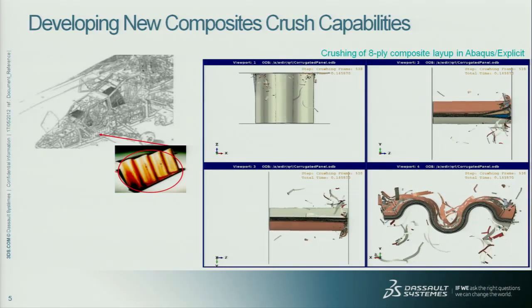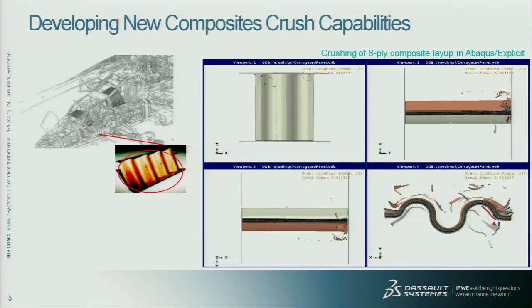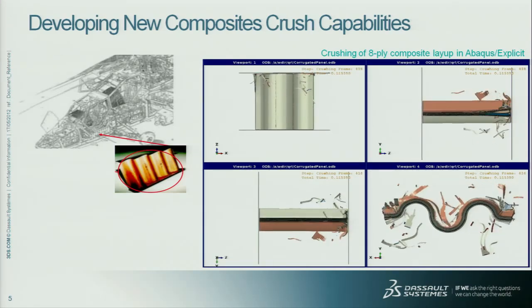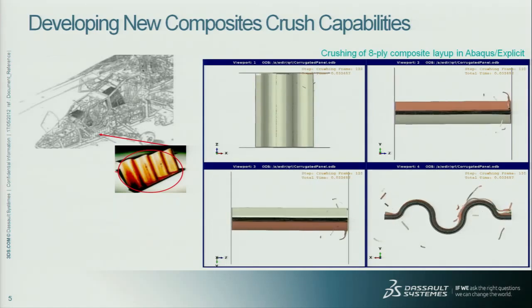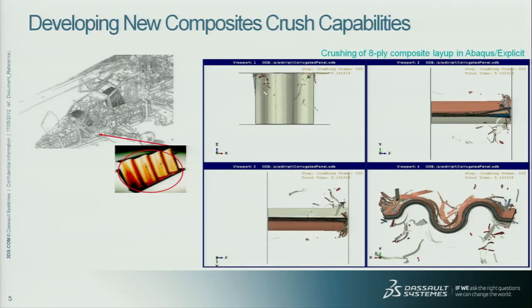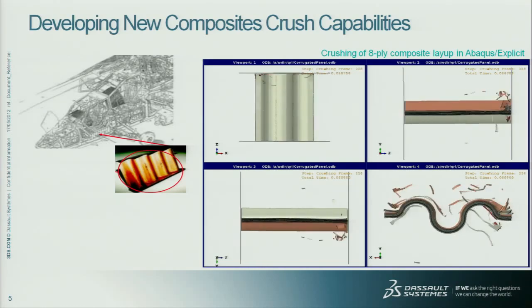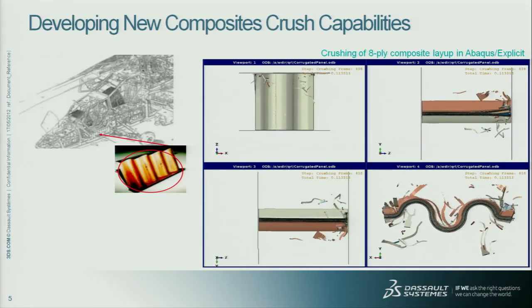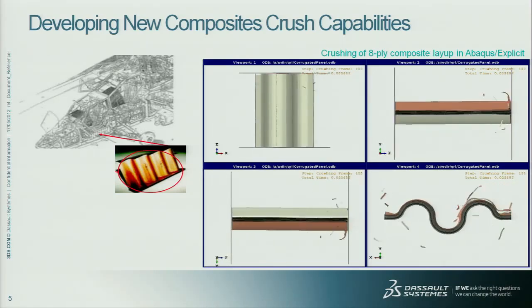We've also been doing a lot of development in composites crush and crashability. This example is a sine wave beam used in helicopters under the pilot and passenger seats to absorb the energy of an impact. In this model, we're using Abacus Explicit and explicitly capturing all the physics of essentially the disintegration of the composite — element by element, ply by ply — the matrix failure and fiber failure. We have cohesive definitions between each ply to capture delamination, and general contact turned on so chunks that fly away will bounce off each other and we can look at secondary impacts.